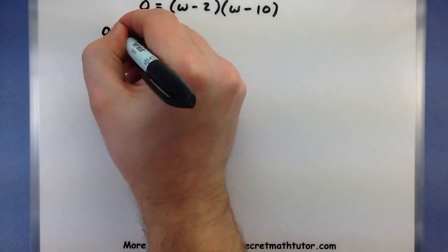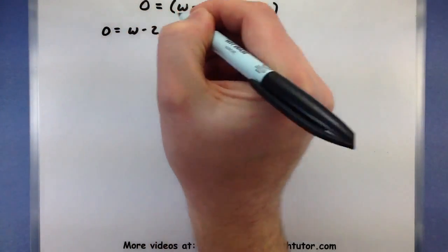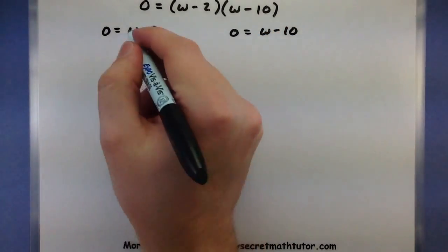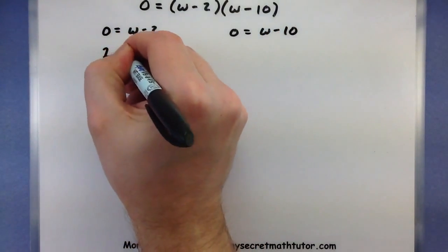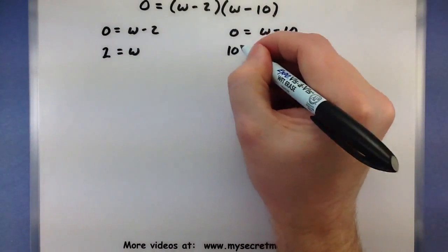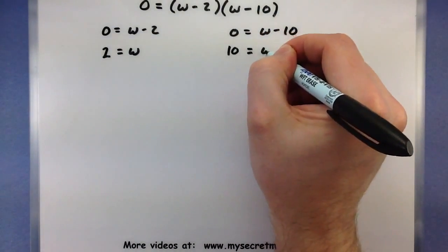So 0 equals W minus 2 and 0 equals W minus 10. So I can add 2 to both sides over here. 2 equals W. And I can add 10 over here. Awesome.